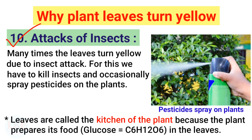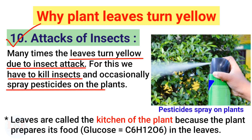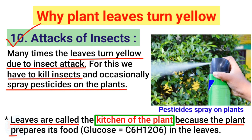Point number 10 — attack of insects. Many times leaves turn yellow due to insect attack. For this we have to kill insects and occasionally spray pesticides on the plants. Leaves are called the kitchen of the plant because the plant prepares its food in the leaves. If there are no leaves, the tree cannot make food, and if plants cannot make food, then we won't get food either. So we have to keep an eye out so that no insects can attack the leaves.